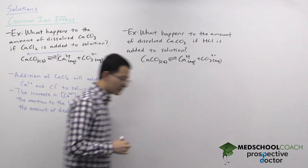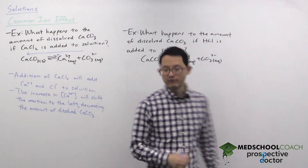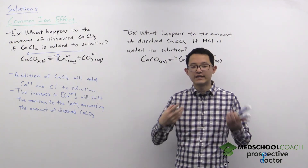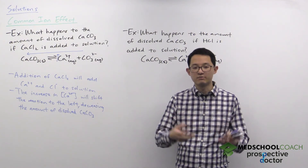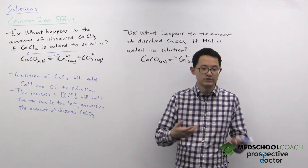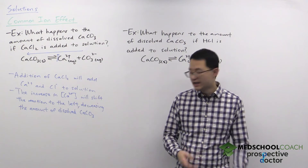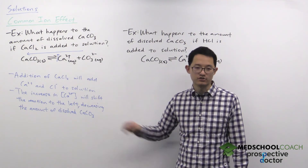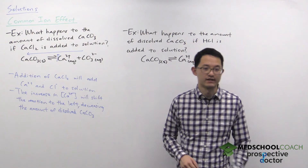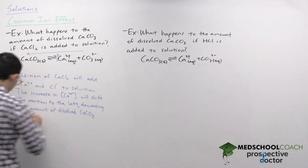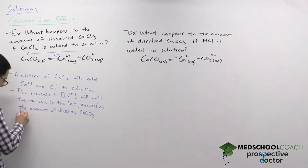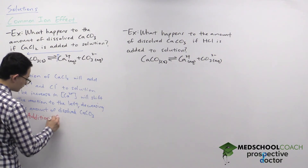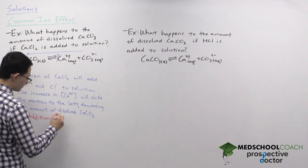The main idea with the common ion effect is: if you're looking at the solubility of some salt in solution and you add a common ion, that's going to reduce the solubility of that salt. Addition of a common ion will decrease solubility.